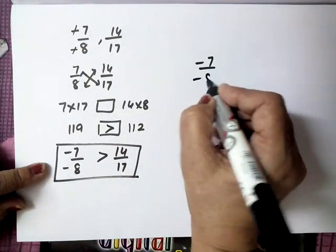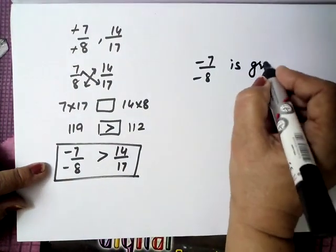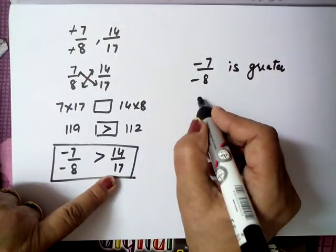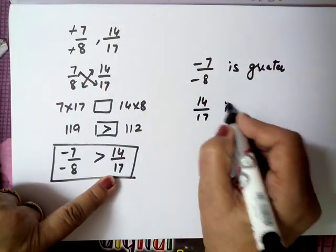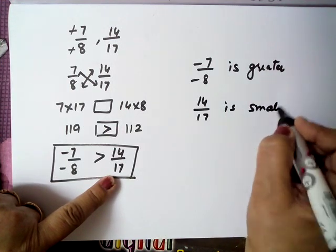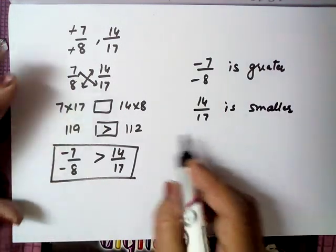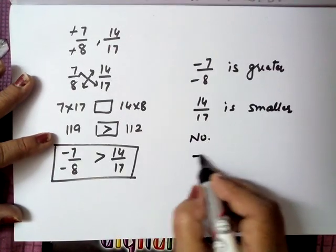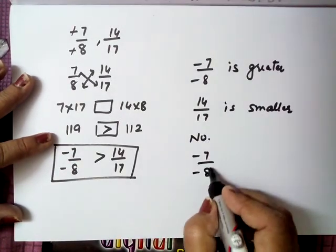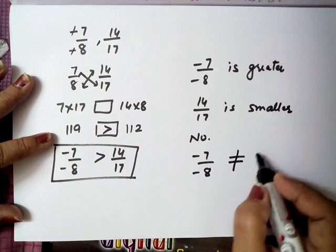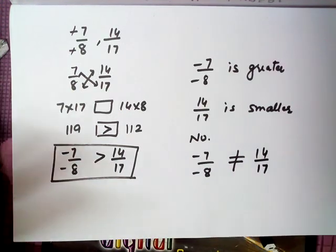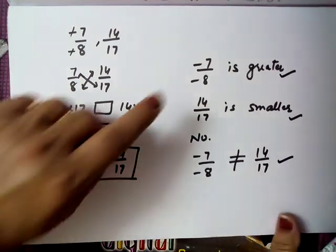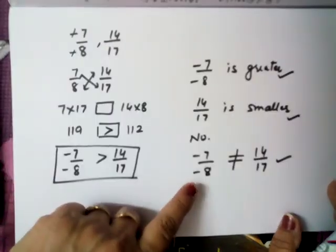Toh aap iska 3 answers kya likhenge: minus 7 upon 8 is greater. Agar aapko smaller pucha jata hai, style will be same — aap likhenge: 14 upon 17 is smaller. Agar aapko pucha jata hai are these equivalent? Hum bolenge no — minus 7 upon 8 is not equivalent to 14 upon 17. Toh ab aap logo ko comparison samajh mein aa gaya hoga: greater, smaller, and not equivalent.